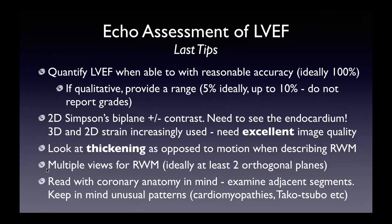We didn't talk much about regional wall motion, but regional wall motion assessment is one of the key aspects of looking at systolic function. Focus on thickening, look at multiple views — ideally at least two orthogonal views — to confirm the same wall motion abnormality. Read with coronary anatomy in mind, examine adjacent segments, and keep in mind unusual patterns such as Takotsubo cardiomyopathy. For example, if you see an apical wall motion abnormality, pay close attention to the anterior wall and anterior septum.